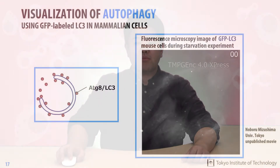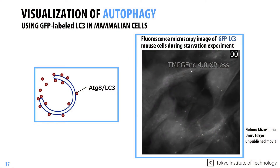Further progress resulting from the discovery of the ATG genes was the identification of a marker to label autophagy-deficient cells, which gave researchers an important tool in autophagy research.